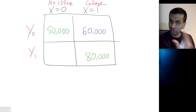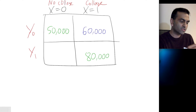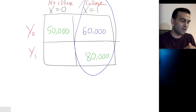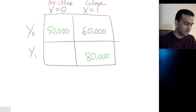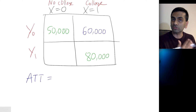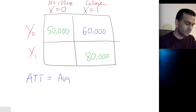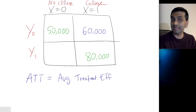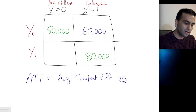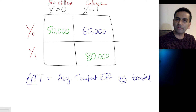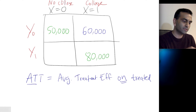So the actual ATE but just for the group who got the treatment is called the ATT. The ATT — that's another really common thing that people try to estimate — is the average treatment effect on the treated. Specifically just on the people who got the treatment.